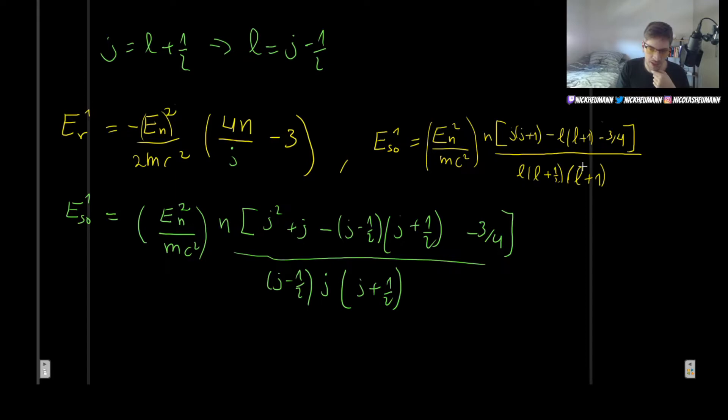So just plug J minus one-half here and you will get this. And finally here we can multiply, right? So this is going to be J squared minus one over four, so we get minus J squared minus one over four, but because of the minus sign that was in the front, we get a plus sign.